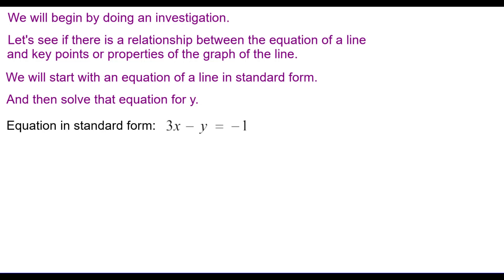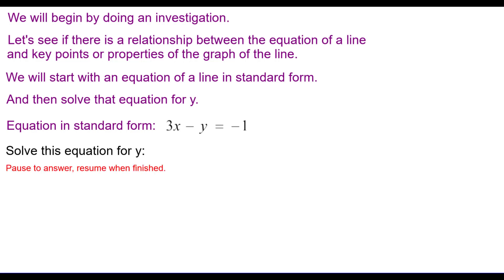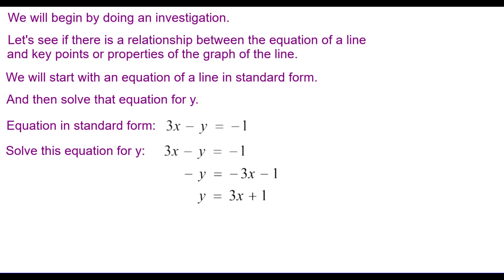Here is our equation: 3x minus y equals negative 1, which is in standard form. To solve this equation for y, first I would subtract 3x from both sides, and then multiply each term by negative 1 to get what y is equal to. So this equation is solved for y — sometimes we say it is solved for y in terms of x.